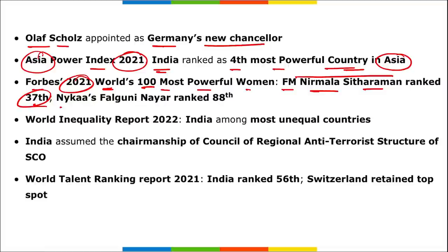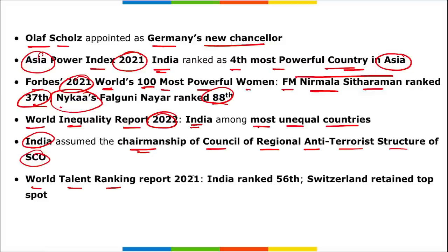The World Inequality Report 2022 was released showing India's rank among the most unequal countries. India assumed the chairmanship of the Council of Regional Anti-Terrorist Structure of SCO. The World Talent Ranking Report 2021 was released — India ranked 56th, with Switzerland on the first position.